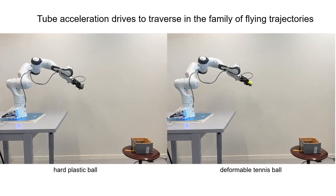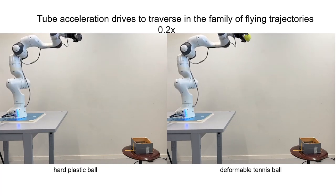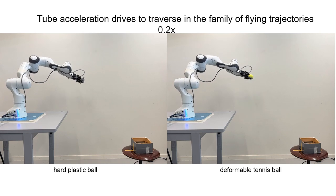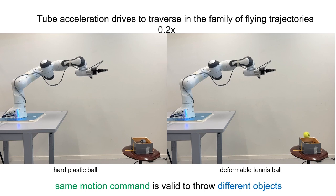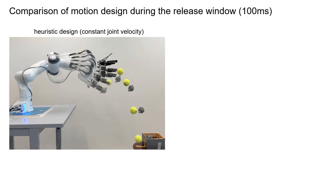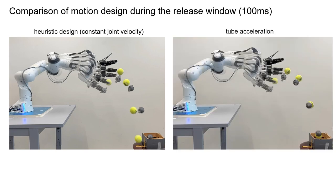As a result, tube acceleration will drive the robot to traverse in the family of valid flying trajectories, and hence the same motion command driven by the tube acceleration is valid to throw different objects. Compared to the previous heuristic motion design, during the 100 milliseconds release window, the more principled tube acceleration robustifies against the release uncertainty. So even if different objects have different release dynamics and hence different flying trajectories, they still achieve the same landing position.